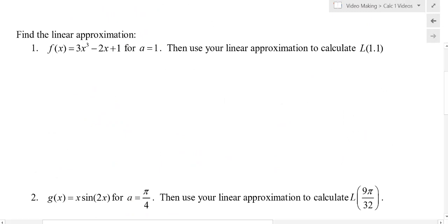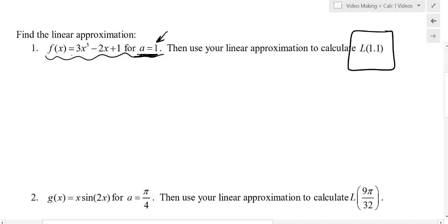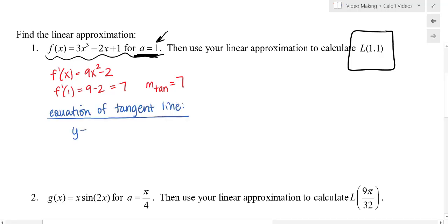You may see different formulas or representations, but remember you're just trying to write the equation of the tangent line at that value, then use that tangent line equation to estimate the function's value at a point really close to the point of tangency. So let's write the equation of the tangent line for f(x) = 3x³ − 2x + 1 when a = 1.